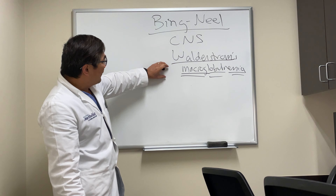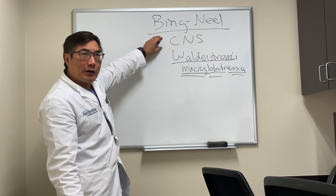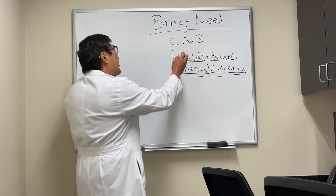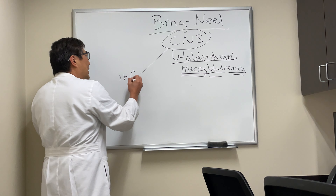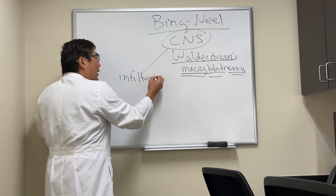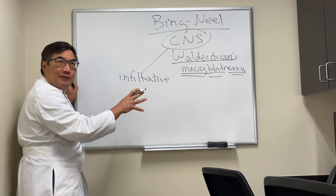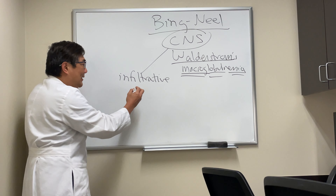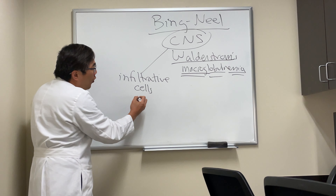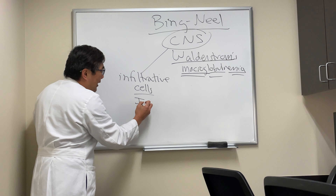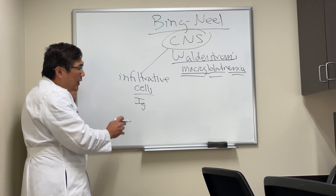The combination of immunoglobulin and cellular infiltrate can directly involve the central nervous system, and that mechanism is an infiltrative mechanism — either from the lymphoproliferative neoplastic cells and cellular infiltrate, or we can have the immunoglobulin, a macroglobulin, causing the problem.